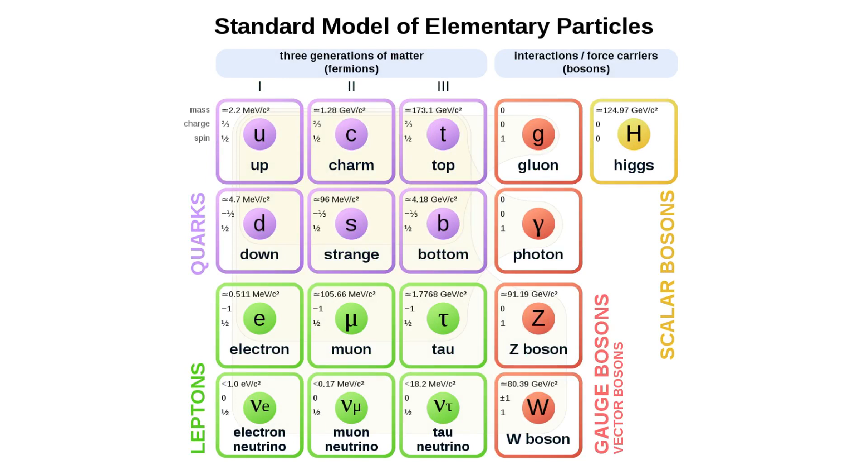Nearly every particle in the standard model of particle physics has to exist, or else we would not be here. Moreover, in most cases, the properties of each particle, such as its mass, had to be just so.